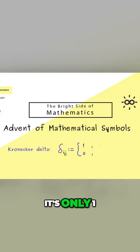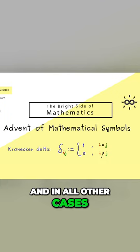It's only 1 when i is equal to j, and in all other cases it's equal to 0.